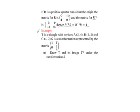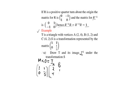Part A: we are supposed to draw T and its image T prime under the transformation S. To draw the object and the image, we have to get the coordinates of the image. So, we take the matrix of transformation times the object coordinates to get the image coordinates. The matrix is [1, 1; 0, ½], and the object coordinates are A(2, 4), B(1, 2), and C(4, 2). We want to find A prime, B prime, and C prime.